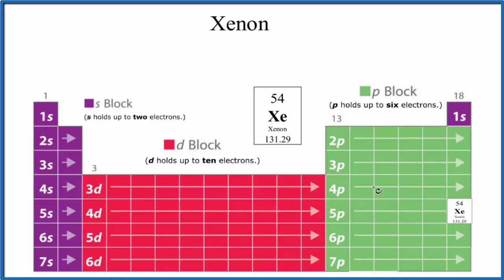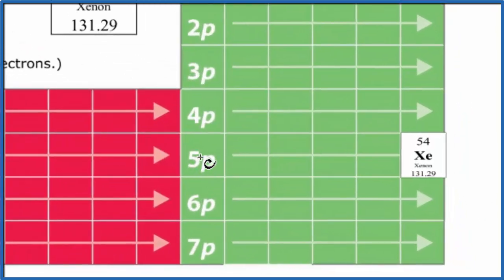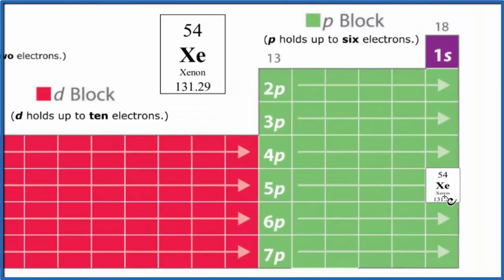So we know right away when we're writing this electron configuration by looking at the periodic table, that xenon right here, if we go over, it's going to end in 5p1, 2, 3, 4, 5, 6. So our last term is going to be 5p6. We already know that from the periodic table.